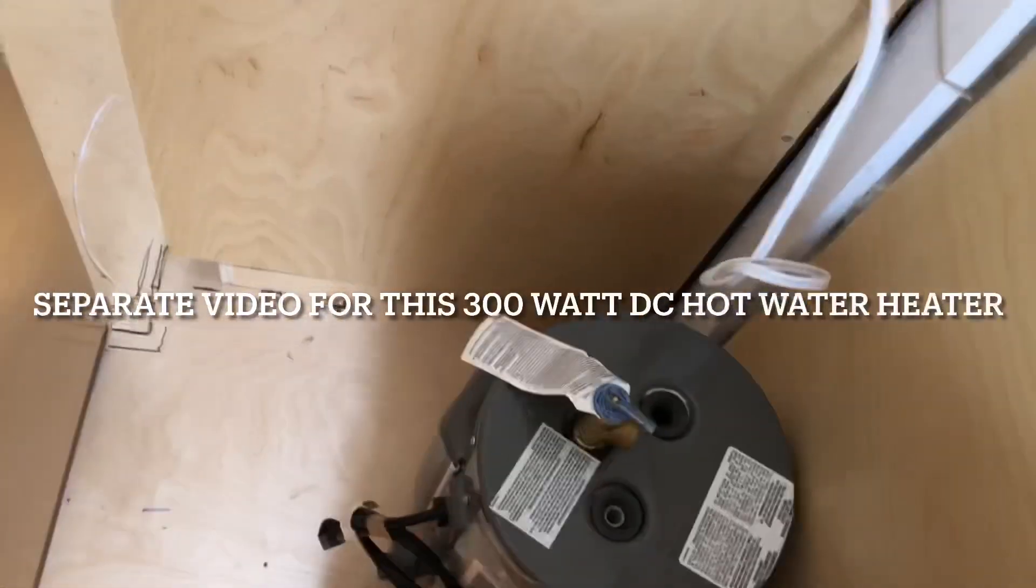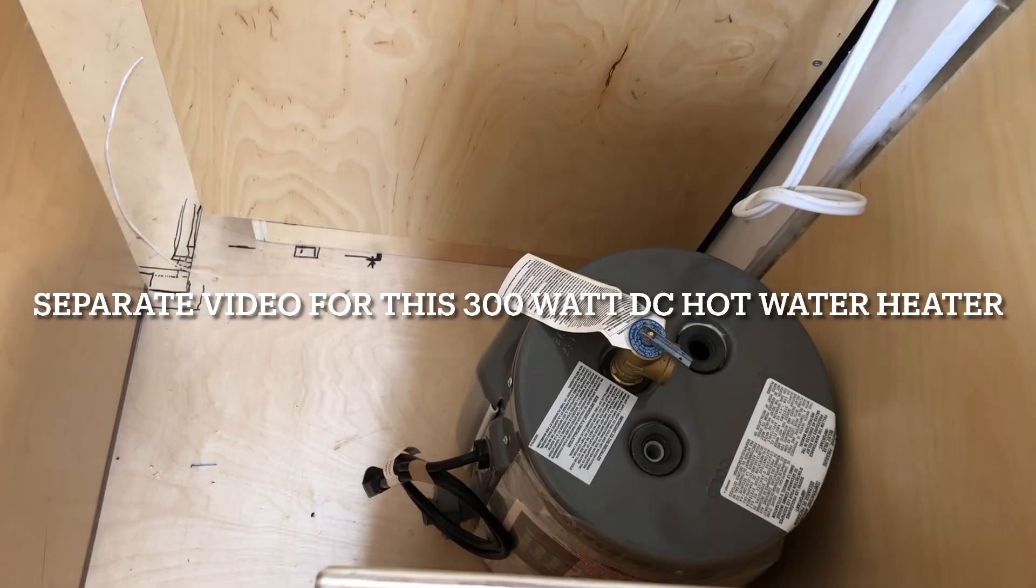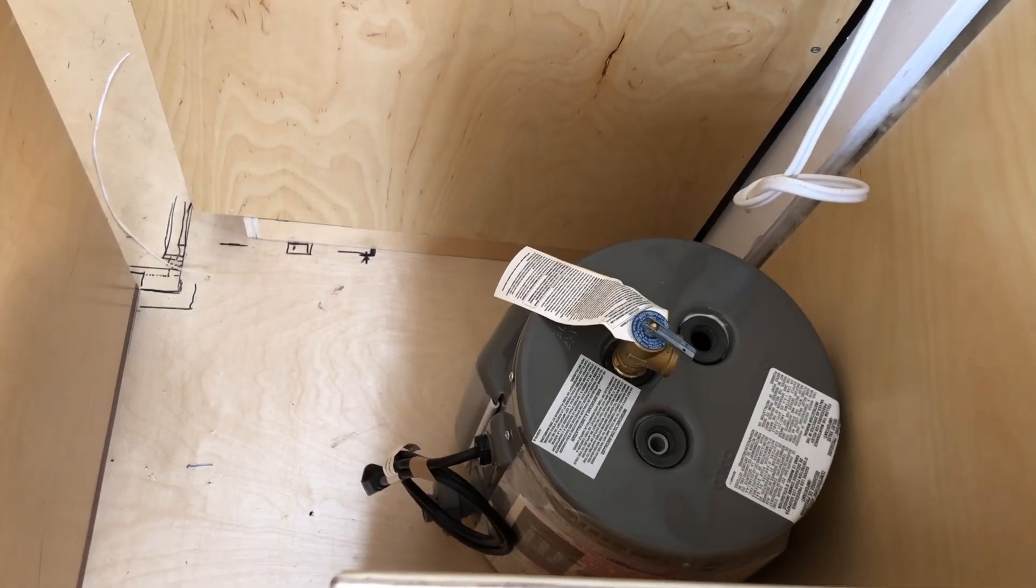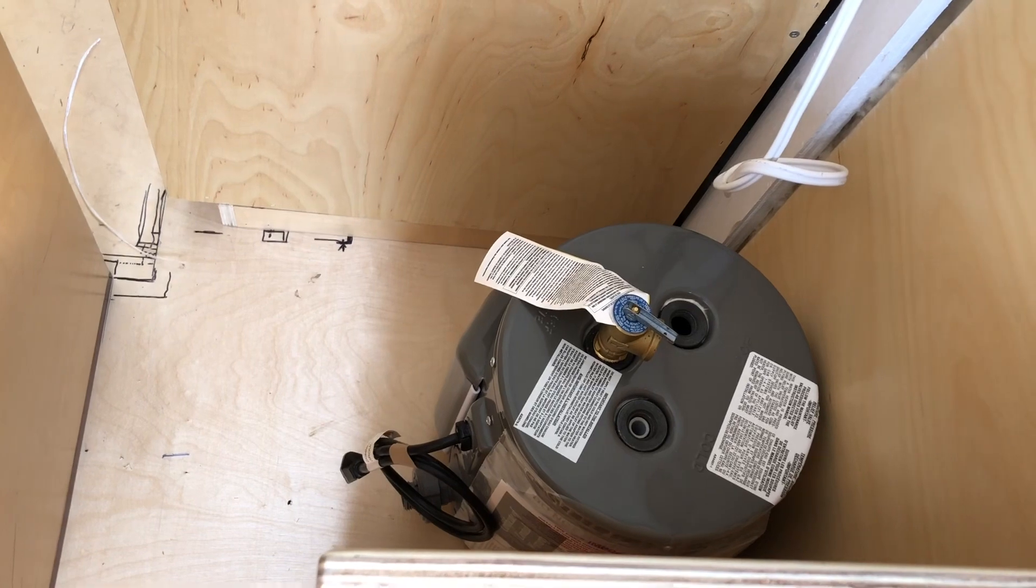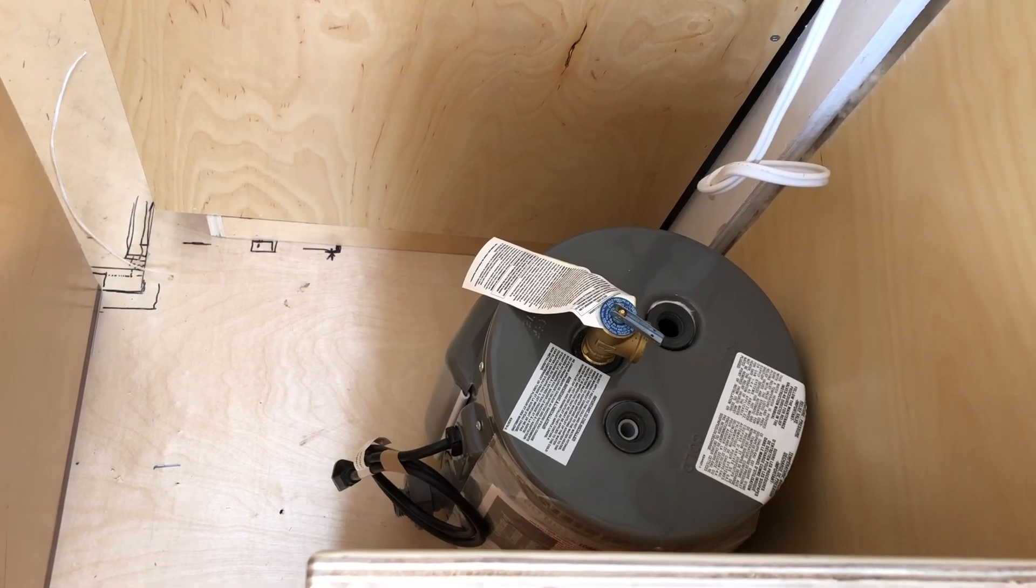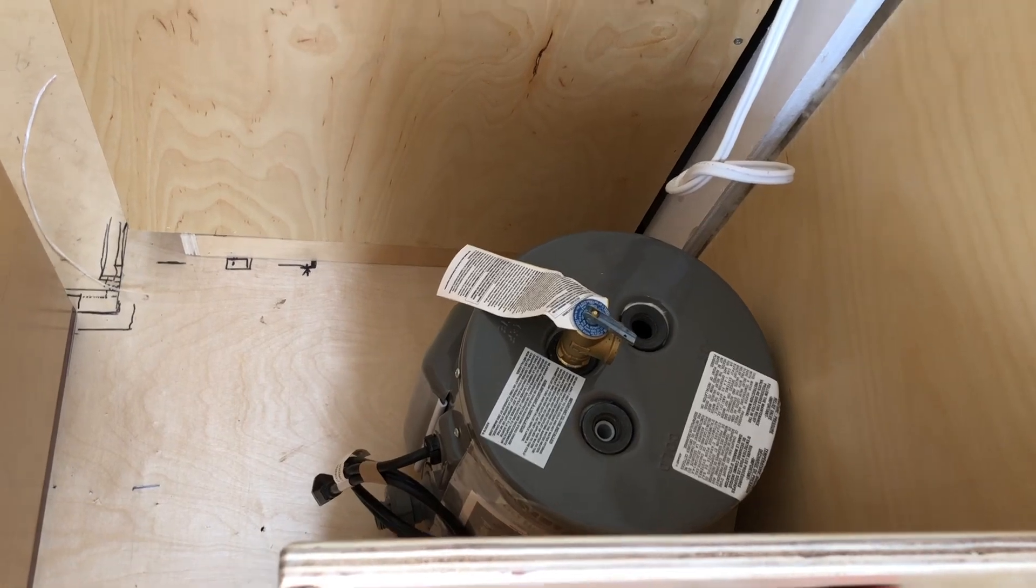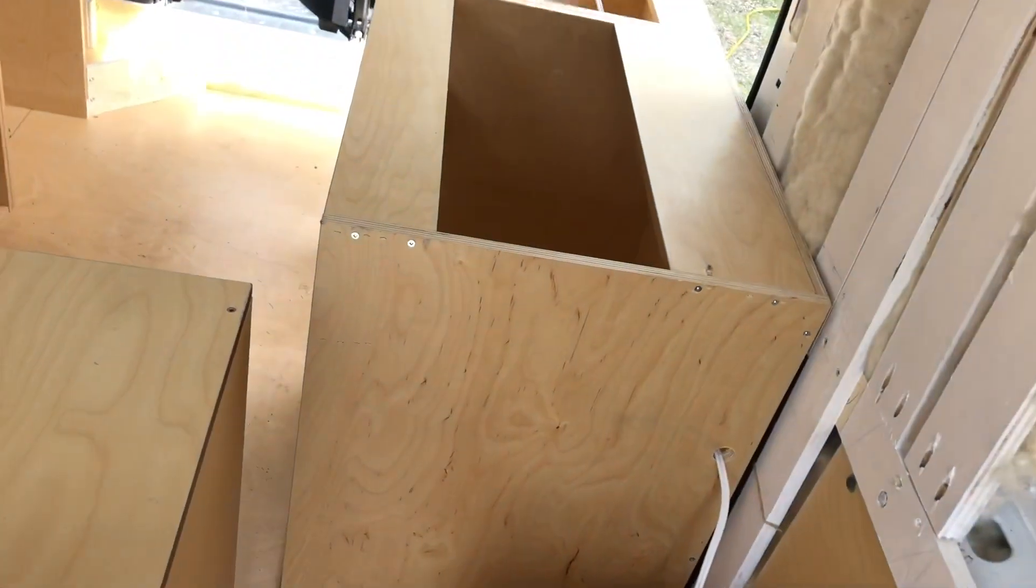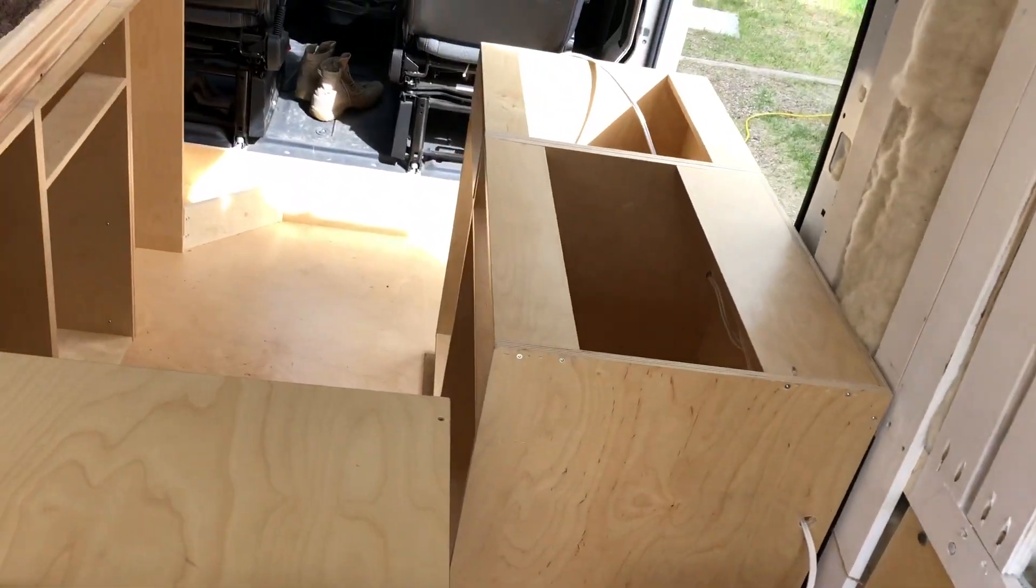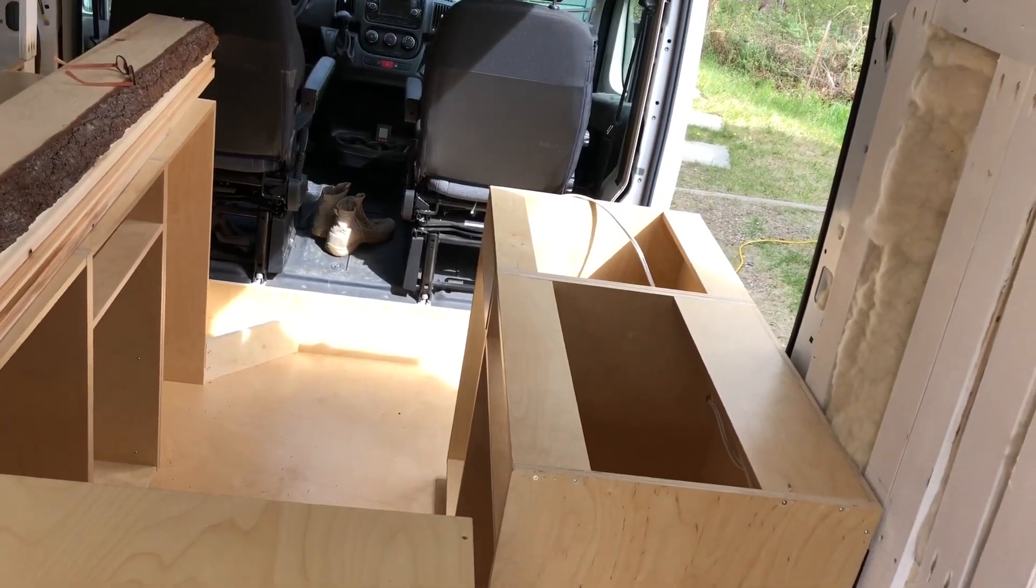This is my DC water heater and this is just a household two and a half gallon water heater that I've purchased a DC heating element for. There will be a switch inside the cabinet to turn on so it will only be running part-time and mostly just when there's solar available.